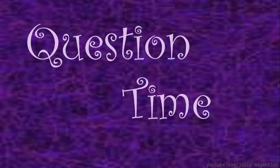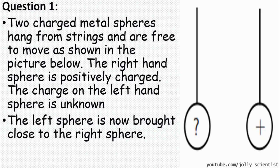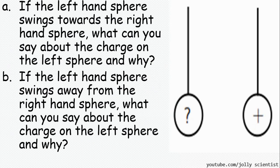Question time. Two charged metal spheres hang from strings and are free to move, as shown in the picture. The right-hand sphere is positively charged. The charge on the left-hand sphere is unknown. The left sphere is now brought close to the right sphere. Now, from your observation, if the left-hand sphere swings towards the right-hand sphere, what can you say about the charge on the left-hand sphere and why?